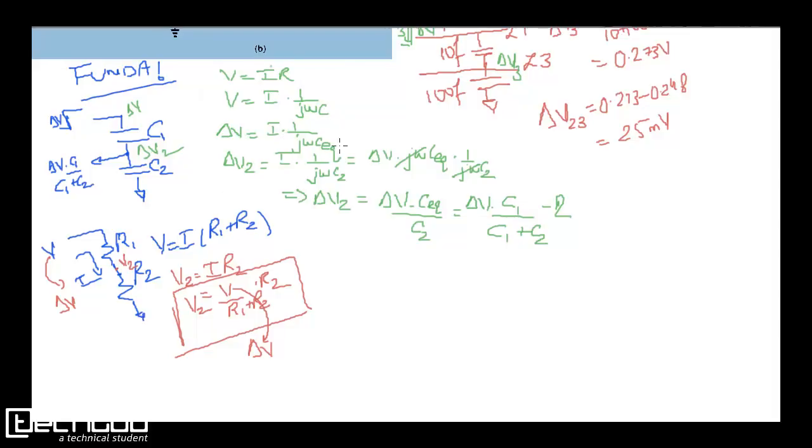So I into 1 by j omega C equivalent. So now delta V2 that you will get is I into 1 by j omega C2. So you replace I, and what you get is delta V into j omega C equivalent, and C equivalent you know that when it is in series it's C1 C2 by C1 plus C2. So when you cancel it, you will get C1 by C1 plus C2. So here for the resistor it is R2 by R1 plus R2 into delta V. Here for capacitor it is C1 by C1 plus C2 into delta V. So capacitance and resistance are opposite. You can see because it is division here and multiplication there.